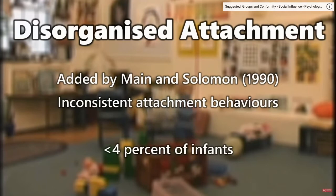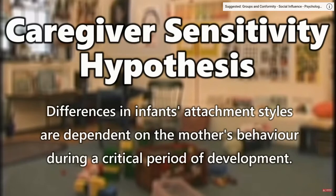Ainsworth's caregiver sensitivity hypothesis suggests that differences in infants' attachment styles are dependent on the mother's behavior towards the baby during a critical period of development.